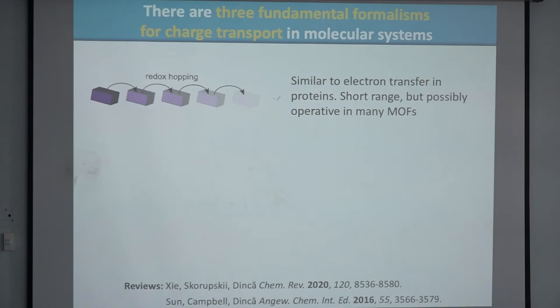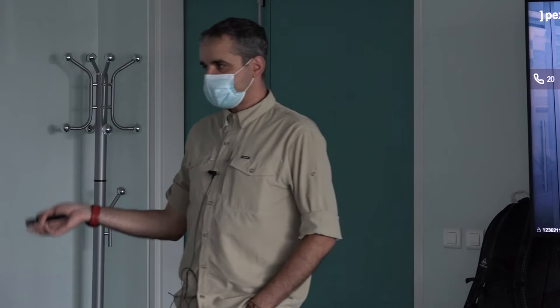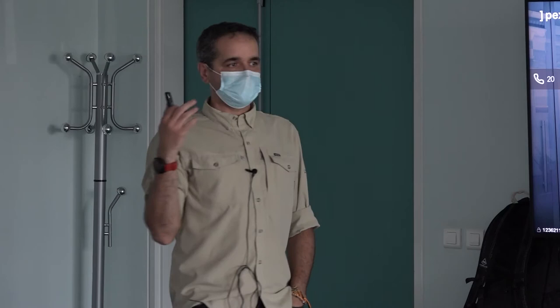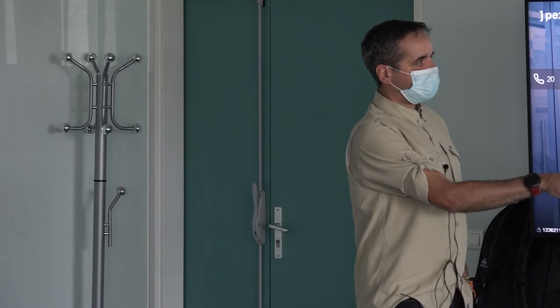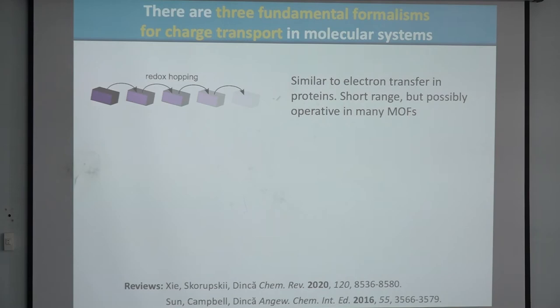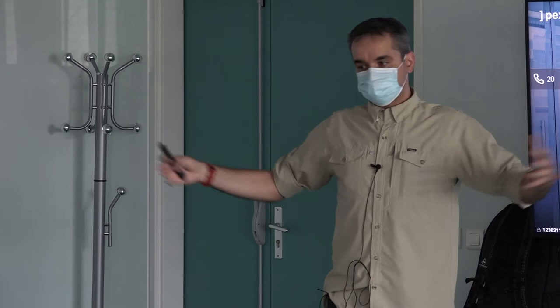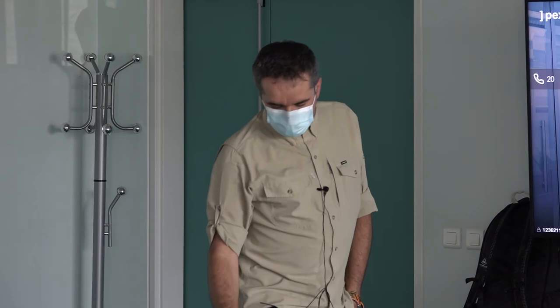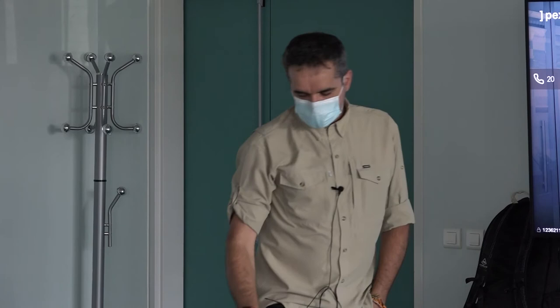MOFs are molecules — the reason they don't conduct electricity is because they're molecules that happen to sit together in a symmetric structure. So you're essentially trying to make conductive molecular systems that also happen to be porous. From a chemist's perspective, there are three formalisms for charge transport: hopping of charges — as happens in proteins with iron-sulfur clusters — which is short range and not going to give you a long wire; pi-stacking, which gives rise to conductivity in many charge transfer salts like TTF-TCNQ; and through-bond transport.